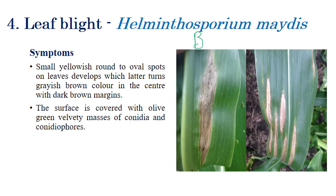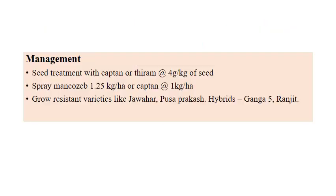Southern corn leaf blight is caused by Helminthosporium maydis, also known as Bipolaris maydis — the teleomorphic stage of Helminthosporium is Bipolaris. Symptoms include a grayish-brown center with dark brown margins on the leaves, especially near the midrib region. Initially small spots develop, which enlarge with grayish-brown centers and dark brown margins. In later stages, wilting-like symptoms near the midrib and yellowing of leaves can be observed. The leaf surface is covered with olive-green velvety masses of conidia — a characteristic symptom of this leaf blight.